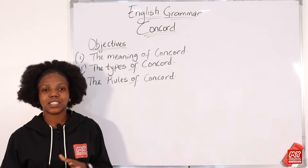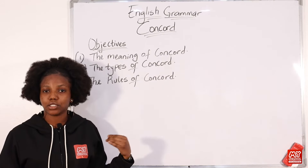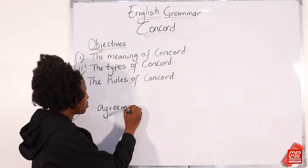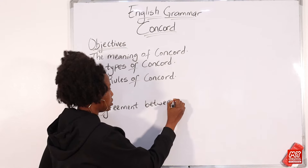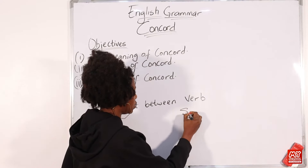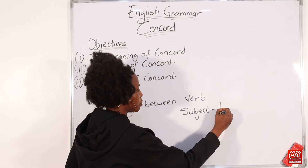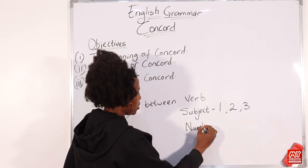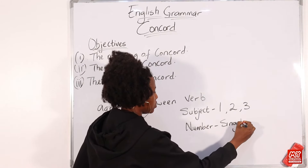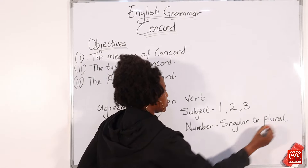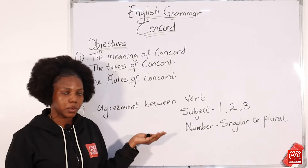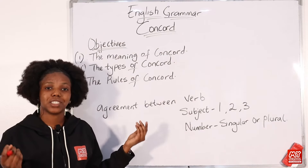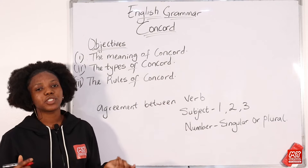Simply put, Concord is the agreement that exists between the verb, the subject, and number. The subject refers to the first person, second person, and third person. Number refers to whether something is singular or plural — and number applies to both verbs and subjects. So it is the agreement between the verb and the subject.